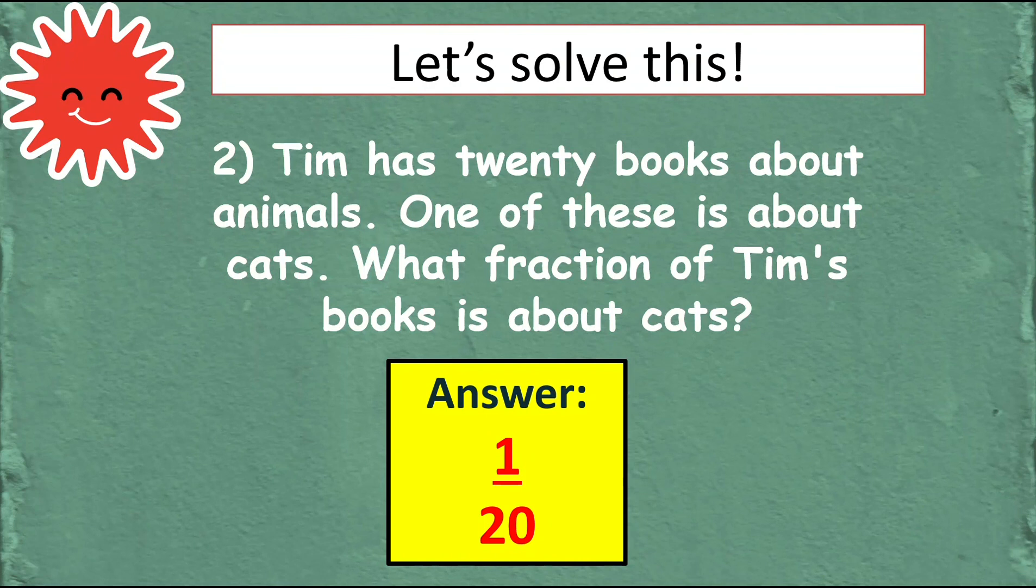Okay great great it's 1 twentieth. Okay there are 20 books that's the denominator and then one of these is about cats so it's 1 twentieth.